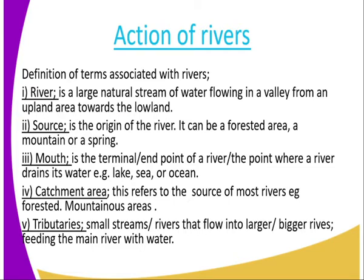Number four is the catchment area. The catchment area refers to the source of most rivers. It means that not only one river comes from that place — there are a number of them. It can be in forested areas, but it can also be in mountainous areas.